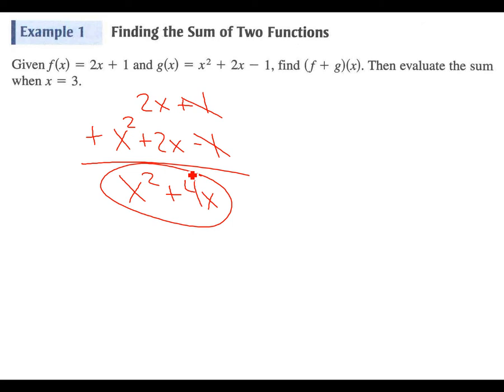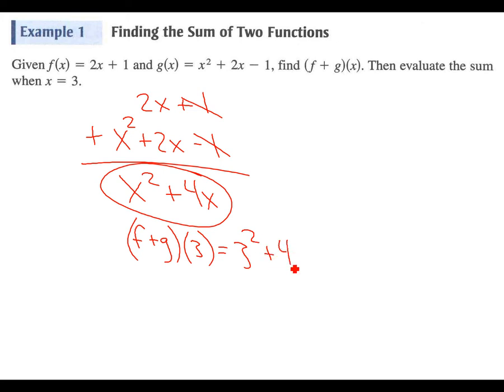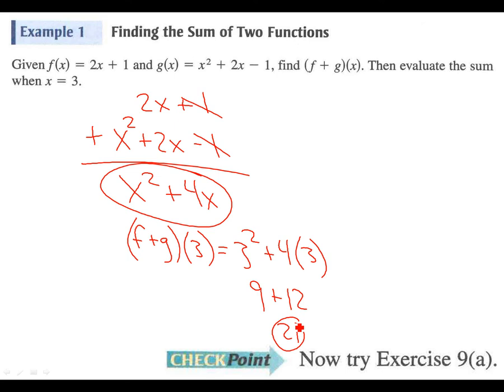And then evaluate the sum when x equals 3. So let's plug 3 in there. f plus g of 3 is going to equal 3 squared plus 4 times 3, so we get 9 plus 12, which equals 21. See if you can do that with exercise 9a.